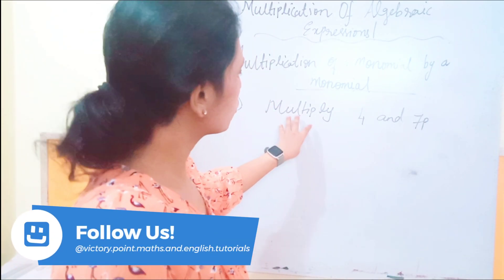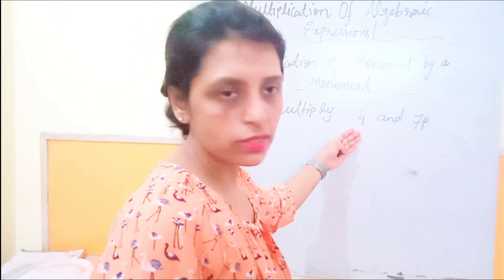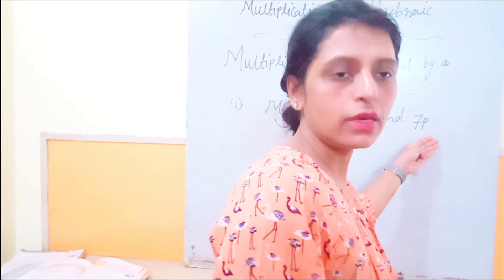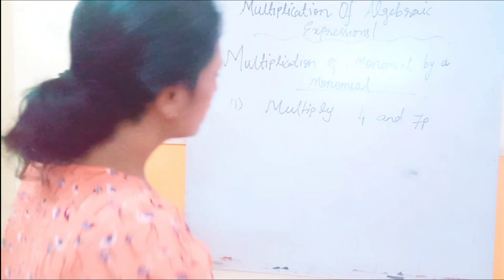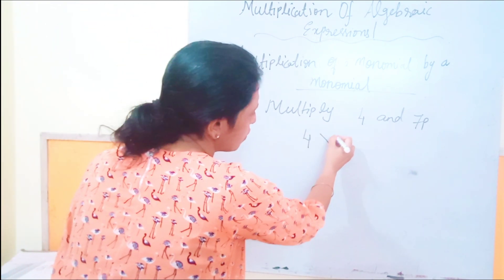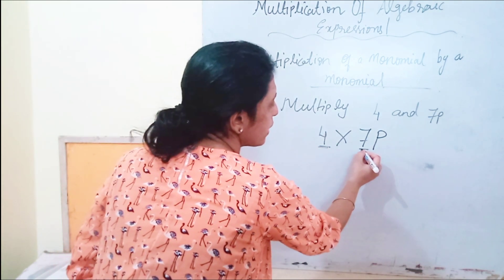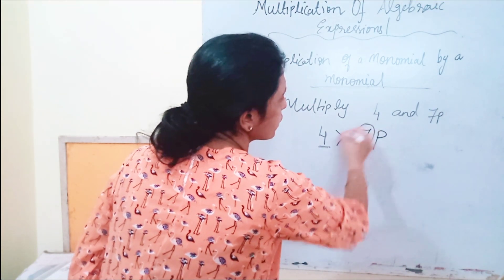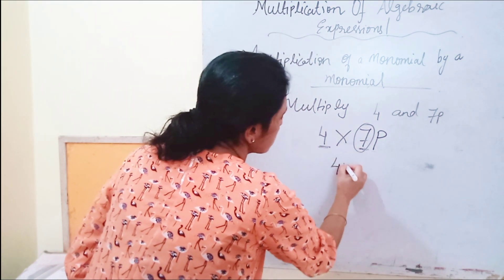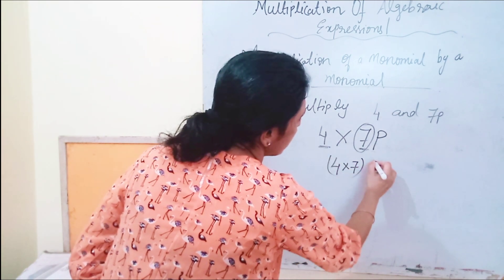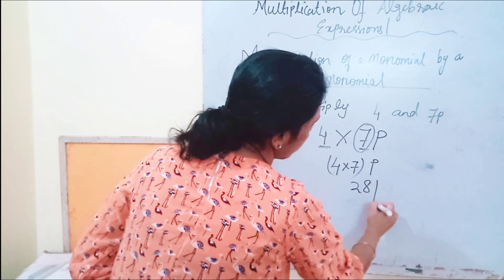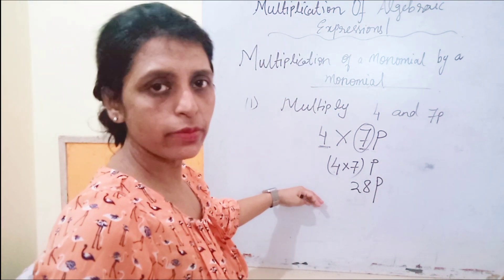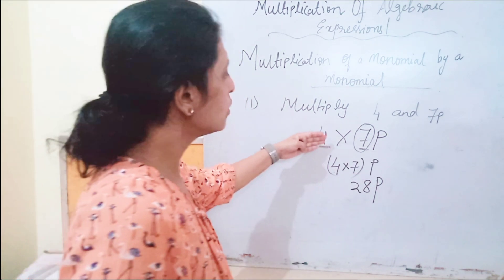Here is the question: multiply 4 and 7p. 4 is a single term and 7p is also a monomial having one term only. Now, 4 is the constant and it will be multiplied with the numerical coefficient of 7p. The numerical coefficient is 7, so 4 times 7 gives us 28p.